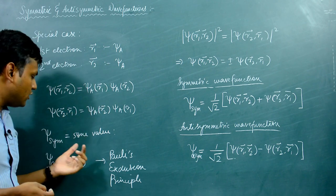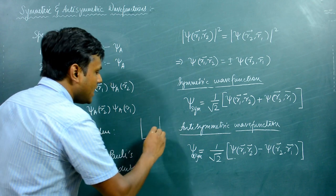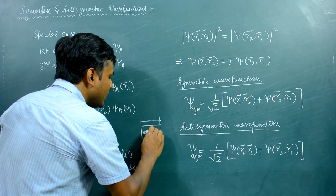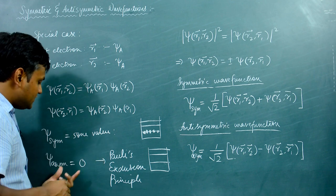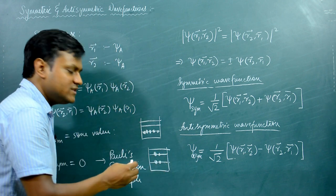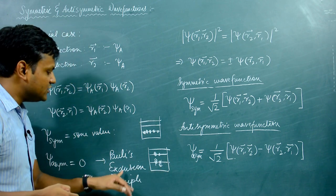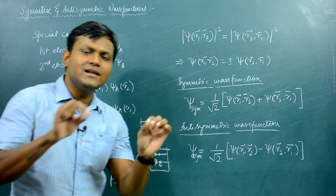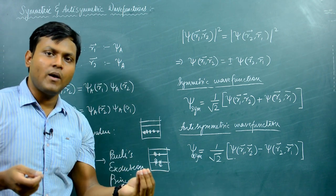For fermions, which follow the antisymmetric wave function condition, it is not possible for two fermions to occupy the same quantum state in a given system. For bosons, however, the symmetric wave function gives a nonzero value, so many bosons can occupy the same energy level simultaneously. Fermions can occupy an energy level only two at a time at most — because particles with opposite spins count as different quantum states — while same-spin particles cannot share a state.